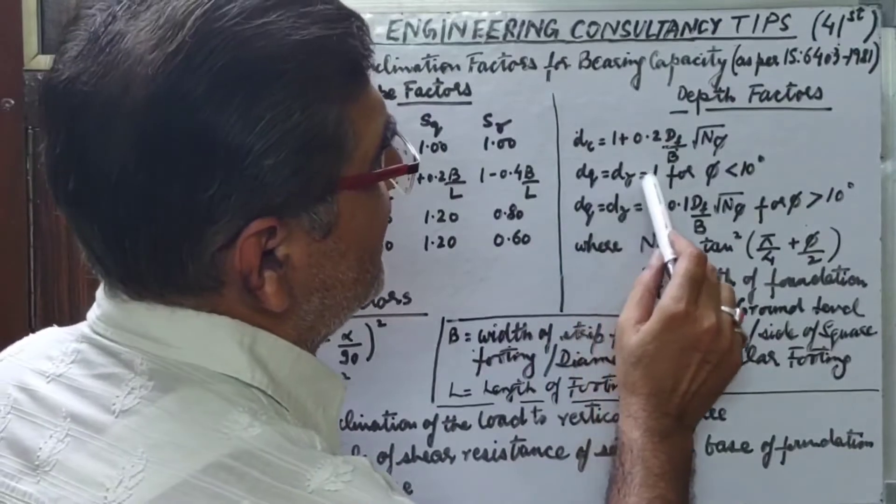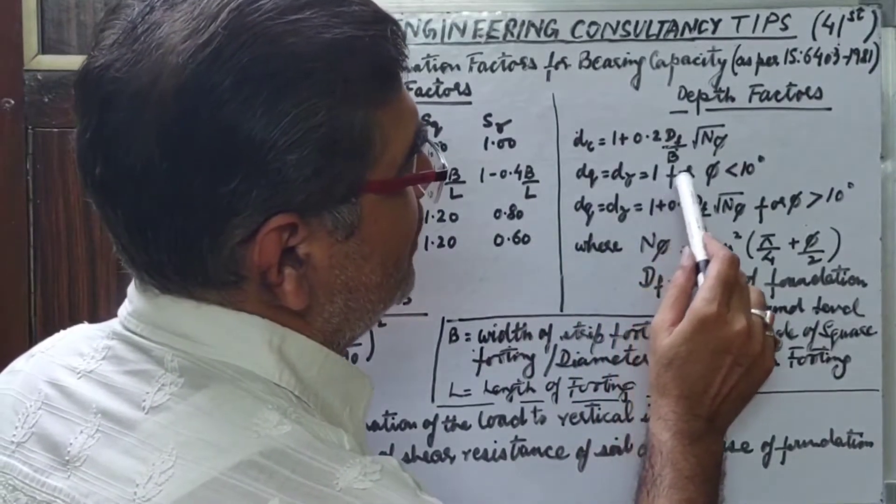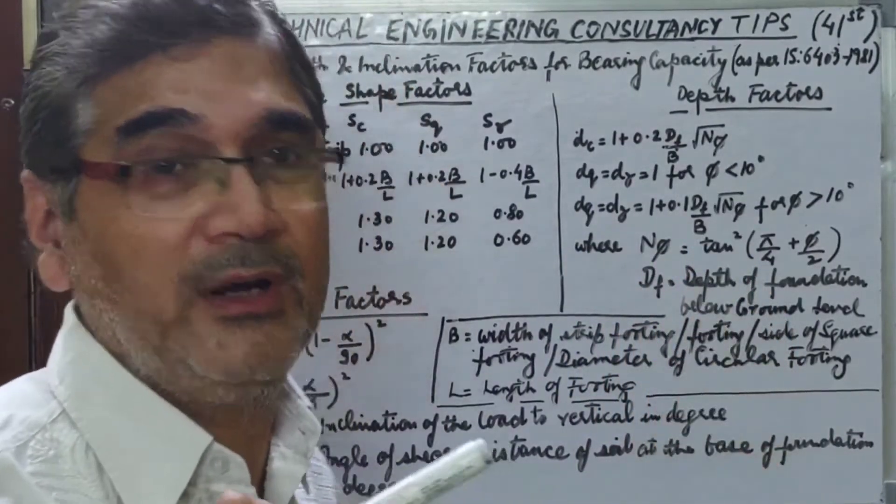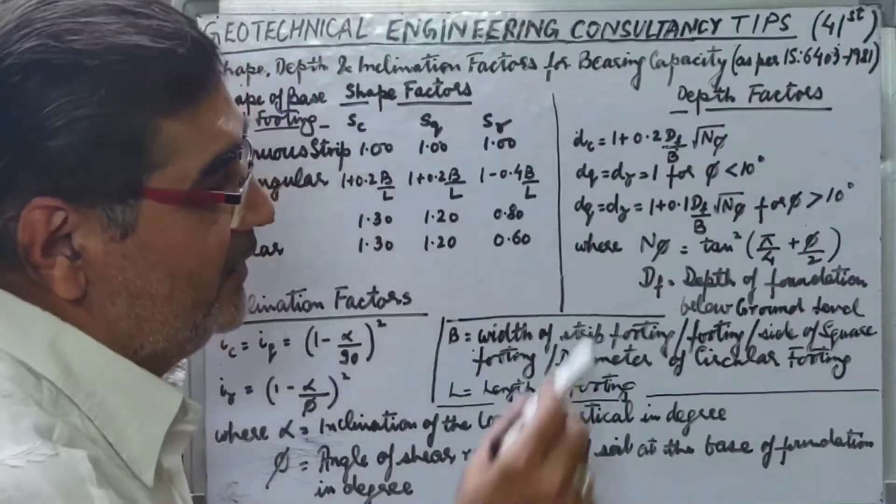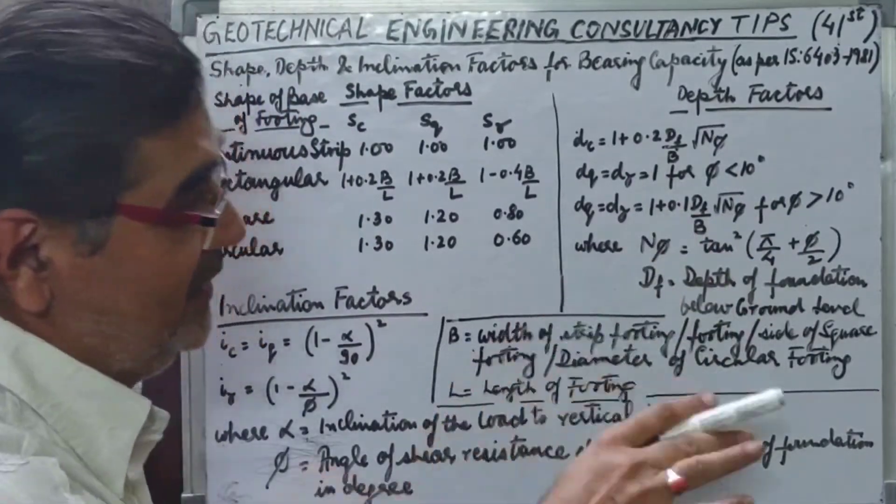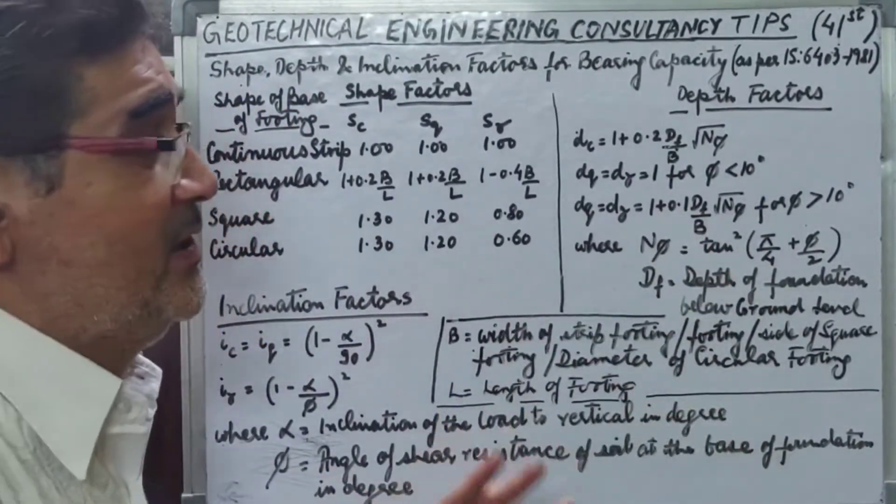So Dq and D gamma has been suggested to be taken as 1 for angle of internal friction less than 10 degrees at the founding level, based on test results.